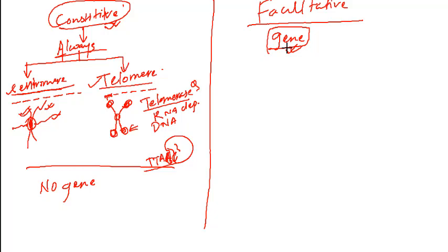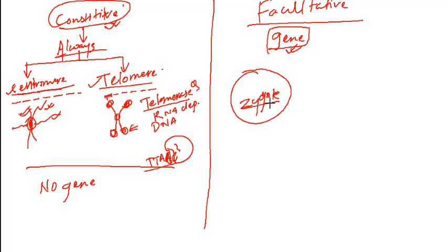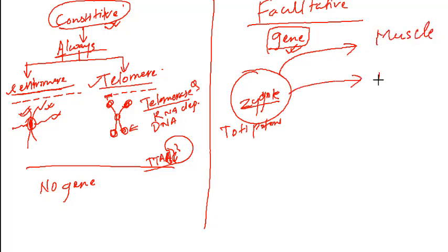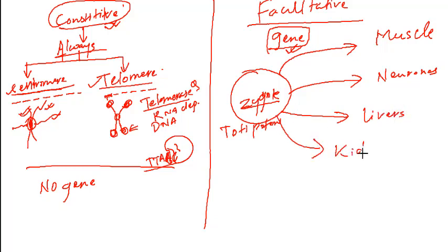What is the function of facultative heterochromatin? Let's consider a zygote. The zygote has almost all genes active because it is a totipotent cell. The zygote will ultimately differentiate into muscle, neurons, liver cells, kidney cells — everything is derived from the zygote. So the zygote has the full set of genes active, but what will happen is certain sets get switched on or off.